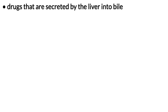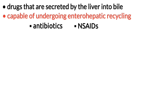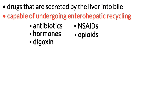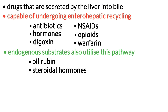A number of drugs are secreted by the liver into bile and are therefore capable of undergoing enterohepatic recycling. These include antibiotics, NSAIDs, hormones, opioids, digoxin, and warfarin. Not only drugs but endogenous substrates like bilirubin, steroidal hormones, and thyroxin also utilize this pathway.